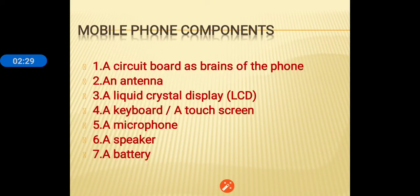Mobile phone components include: a circuit board as the brain of the phone, an antenna, an LCD (liquid crystal display), a keyboard, a touch screen, a microphone, a speaker, and a battery. These are the main components of the mobile phone.